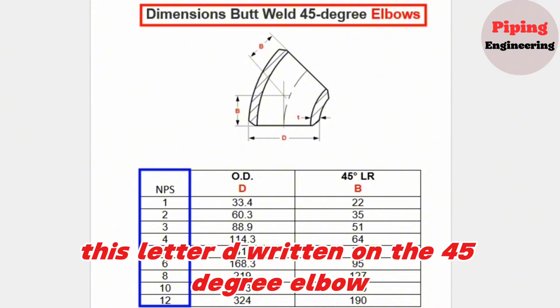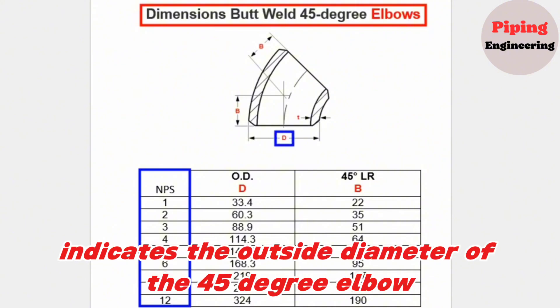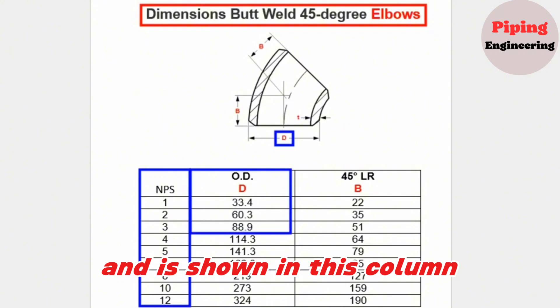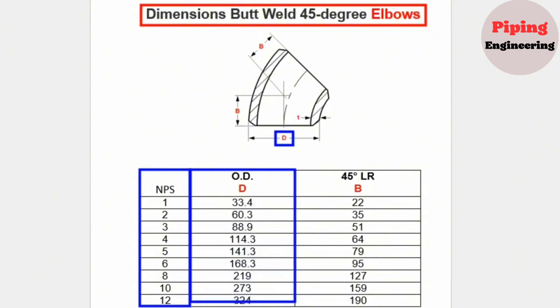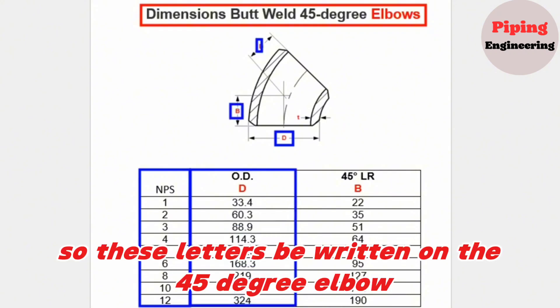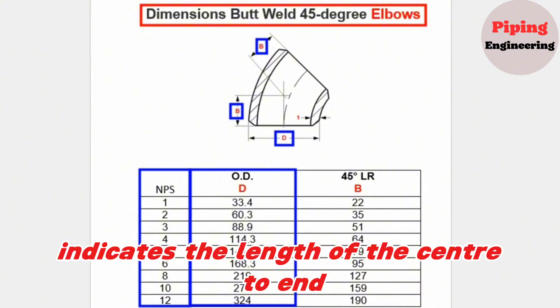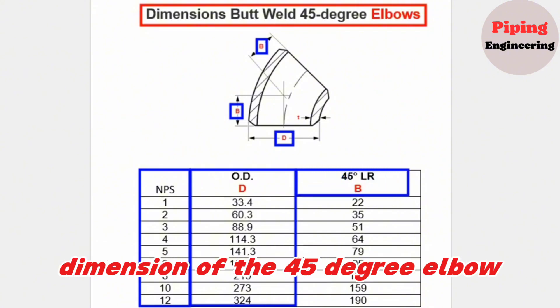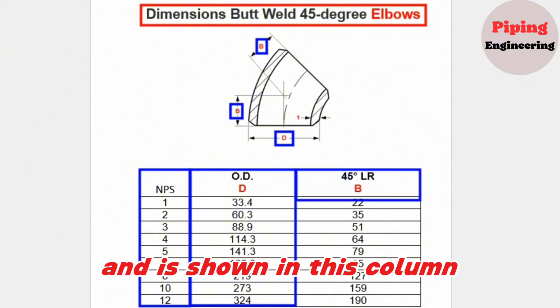The letter D written on the 45-degree elbow indicates the outside diameter and is shown in this column. The letter B indicates the length of the center to end dimension of the 45-degree elbow and is shown in this column.